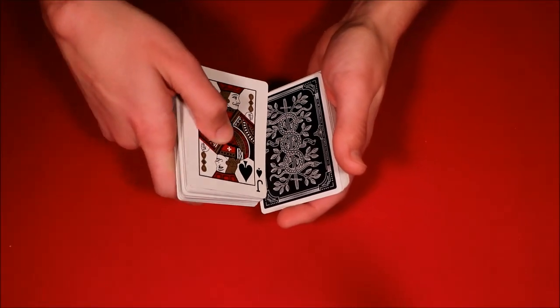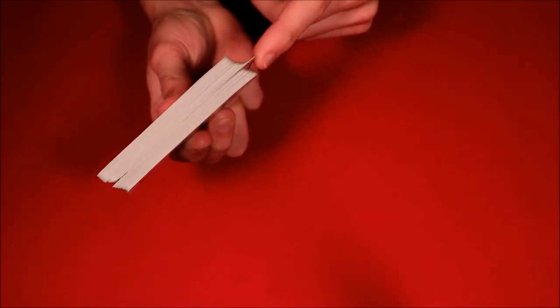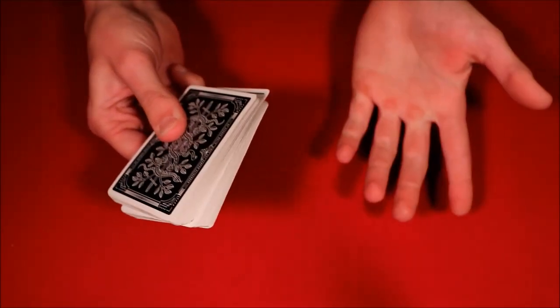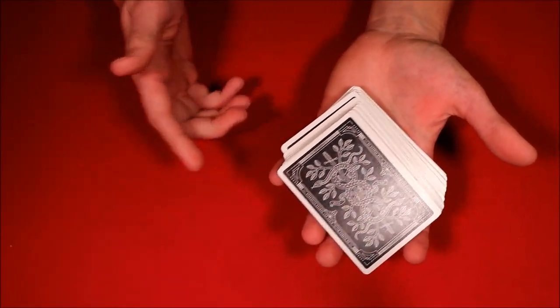When you leave them outjogged, you're going to be left with this little indentation. All you have to do is get a break right there, and that is essentially where the card's at. In your left hand you can relax the grip and you're always going to see where this card is. You can talk to your spectators.